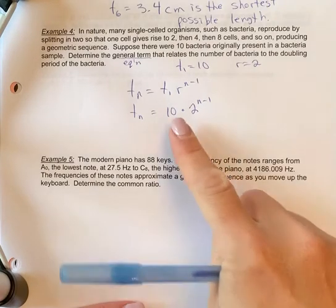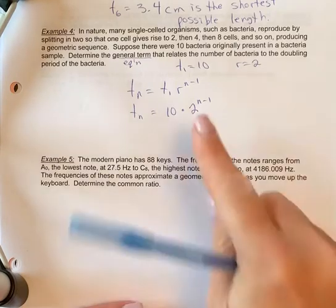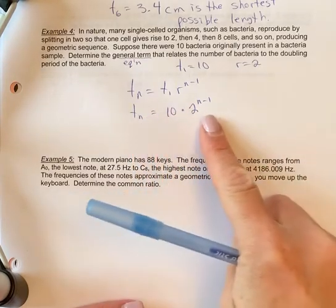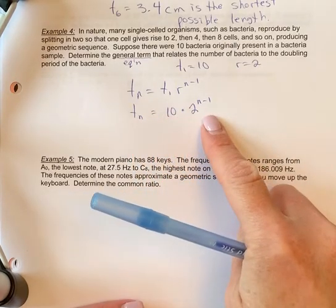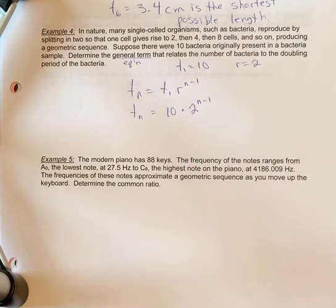There are some things depending on the numbers that sometimes you can simplify, but we're not there yet so we don't need to do that. You would just leave it like this. Anytime you're asking for a general term, you just put in the term one and then the r value.